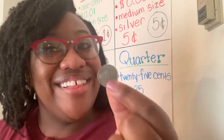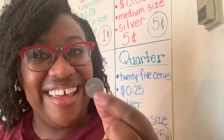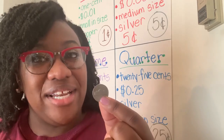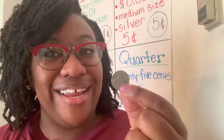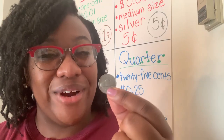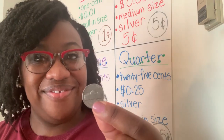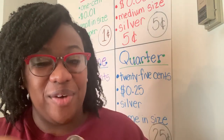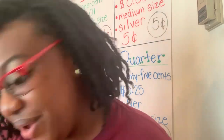We're going to flip our nickel over to the tails. The tail of our nickel has Monticello on it — the house built in honor of President Jefferson. All right, so we're going to put our nickel down for later and look at our next coin.